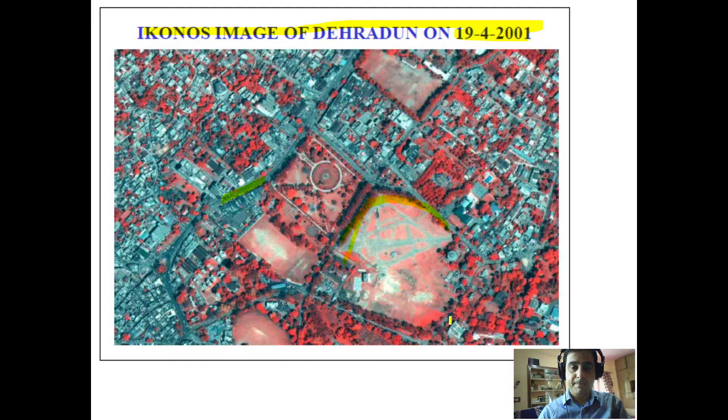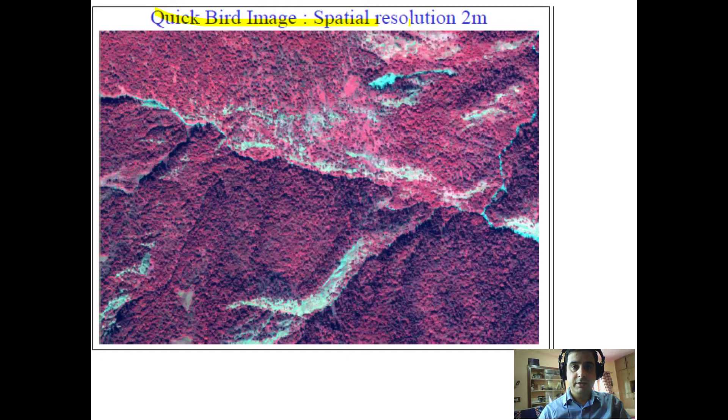You can see the urban forestry, all the urban habitation in cyan color, and a little bit of grass on the ground which can be seen in a pink color, but the trees can be seen in red color. This is QuickBird image, spatial resolution of two meter of a forest.